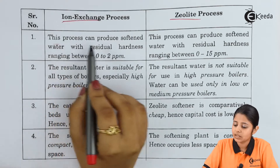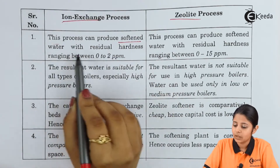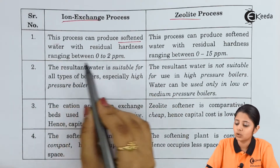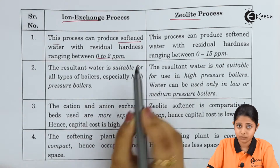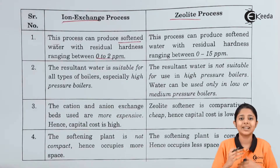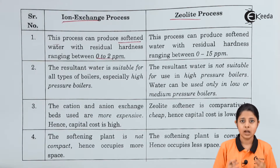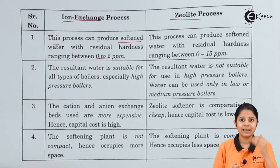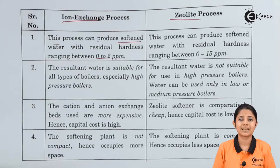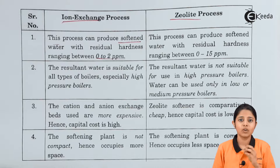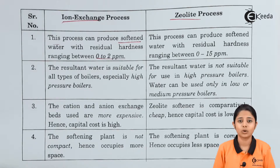The ion exchange process can produce softened water with a residual hardness of 0 to 2 ppm. After water passes through the cationic bed and the anionic bed, the ion exchange process also has a gas chamber. That chamber removes all dissolved gases present in water that contribute to hardness.